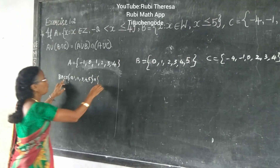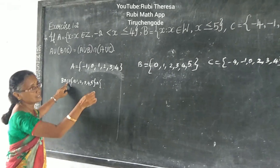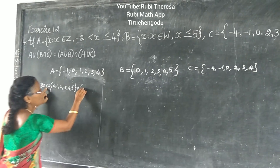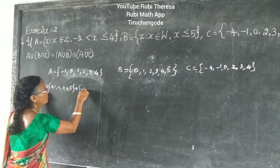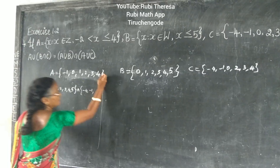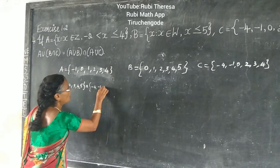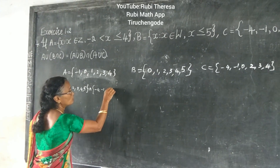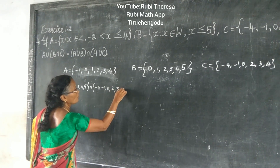Intersection. What is C? C is: minus 4, minus 1, 0, 2, 3, 4.